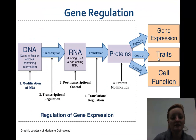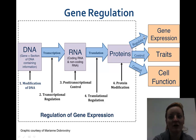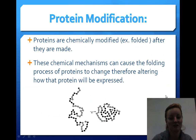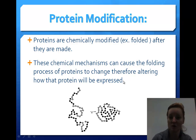Next is protein modification. If we change the protein, we can regulate gene expression, our traits, and cell functions. Proteins are chemically modified — we can fold them after they're made, and these chemical mechanisms can cause the folding process to change, therefore altering how the protein will be expressed. If the protein is very specific and can't do its job, it will not be useful.